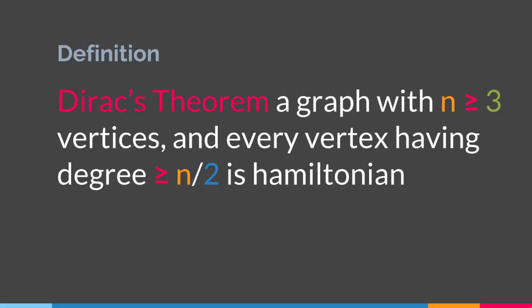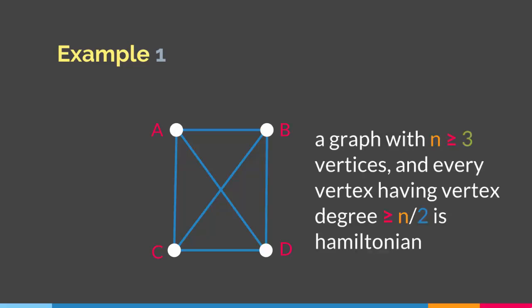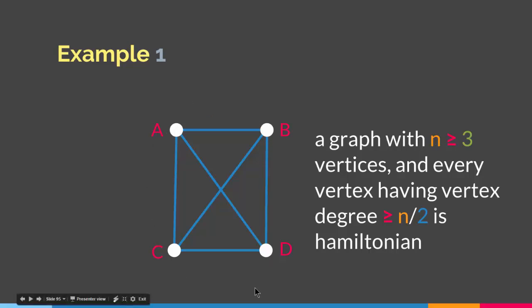Let me give you an example on this theorem. We have a graph with 4 vertices. Based on Dirac's theorem, we have more than 3 vertices. The degree of each vertex is 3. The number of vertices is 4, and half of 4 is 2. Since every vertex has degree 3, the degree of each vertex is greater than half of the number of vertices.